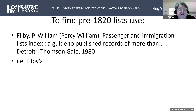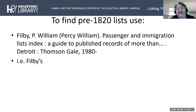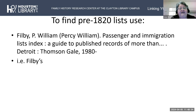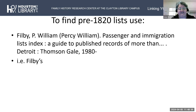To find any pre-1820 lists, including colonial era passenger lists, look at the Passenger and Immigration Lists Index. The subtitle is 'A Guide to Published Records of More Than' — and the different volumes say more than 200,000 immigrants, 100,000, 50,000, and so forth. It was created and indexed by Percy William Philby, so it's usually called Philby's Passenger and Immigration List Index.